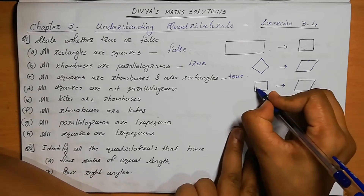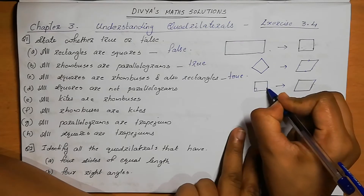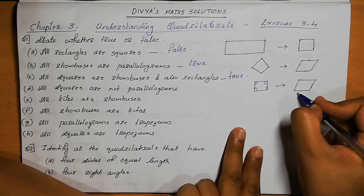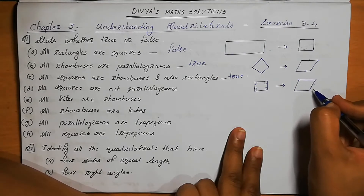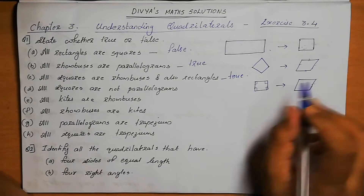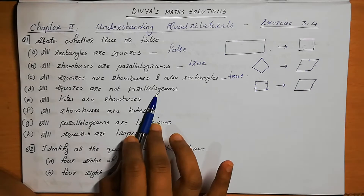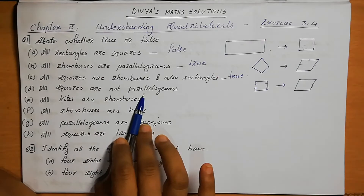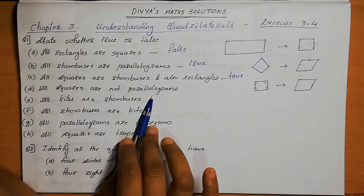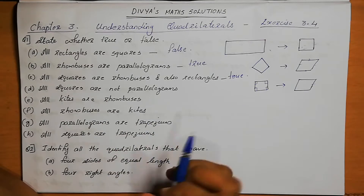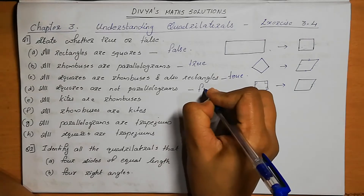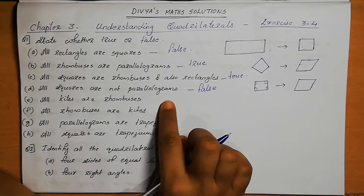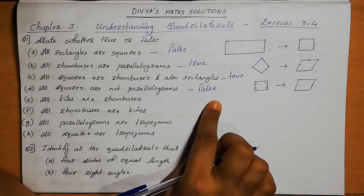In a square, all angles are 90 degrees, so opposite angles are 90 degrees — that condition of a parallelogram is also satisfied. So all squares are parallelograms is correct. But the statement says all squares are NOT parallelograms, which means this is a false statement.